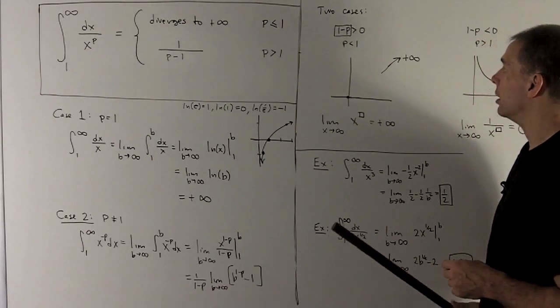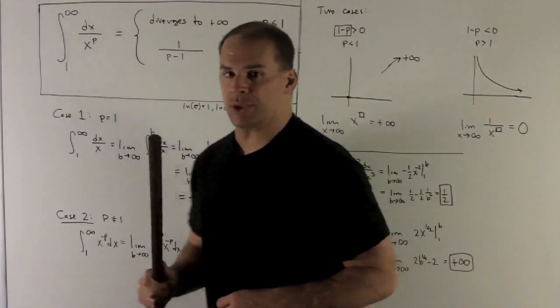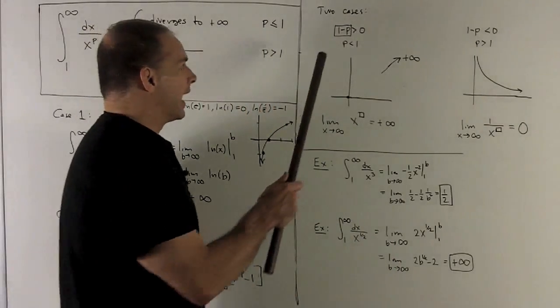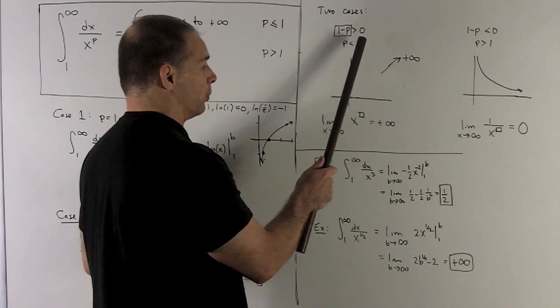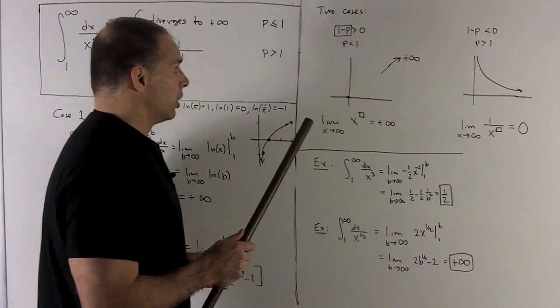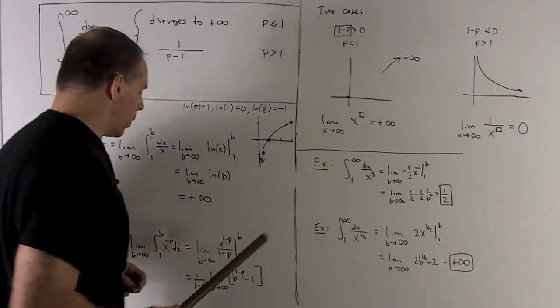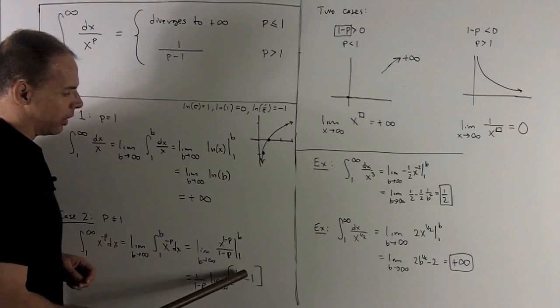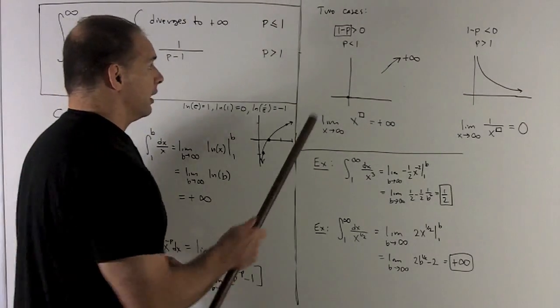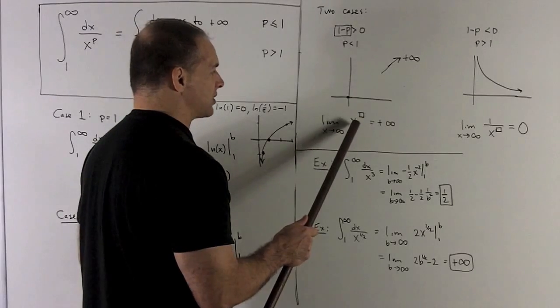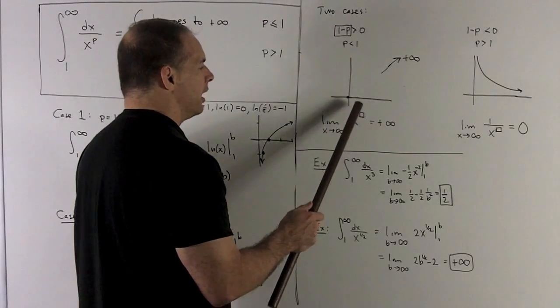So let's take a look. This is going to split into two cases. When I have 1 minus p bigger than 0, that's going to be the same as saying p is less than 1. Let's take a look. Well, this is going to be the exponent of my b to the 1 minus p. So I just pretend that 1 minus p is in a box. If that's positive, then this is x to a positive power. And these functions,